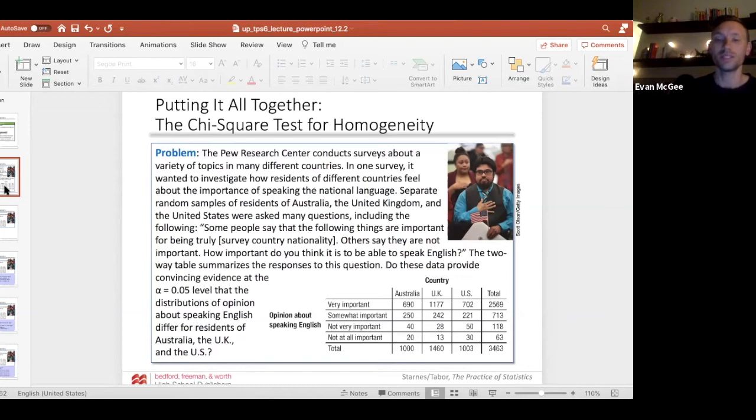The two-way table summarizes the responses to this question. Do these data provide convincing evidence at the 5% alpha level that the distributions of opinion about speaking English differ for residents of Australia, the UK, and US? So here's the two-way table. You can see the opinions here versus the countries here. This is, excluding the totals, a four row and three column table.